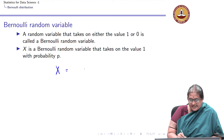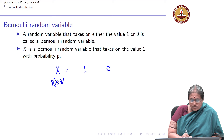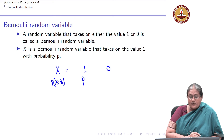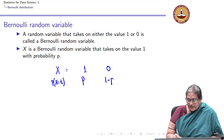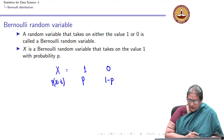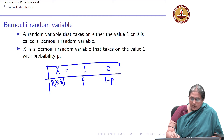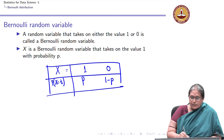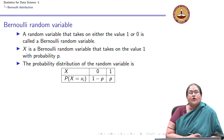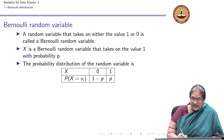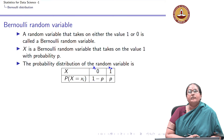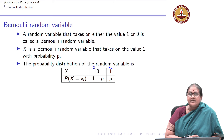X takes only two values, 1 and 0. Let the probability that X takes the value 1 be p. Then the probability X takes the value 0 has to be 1 minus p, because the sum of probabilities must equal 1. This gives the probability mass function: X takes x₁ = 0 with probability 1 minus p, and x₂ = 1 with probability p.